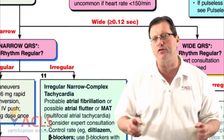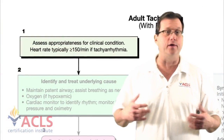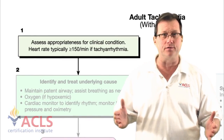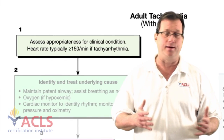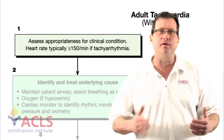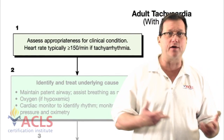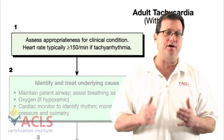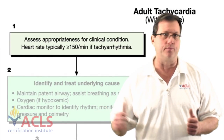I want to take a few minutes and just review narrow complex tachycardias. A tachycardia is any rhythm that has a ventricular rate over 100. What we're concerned about in the adult is when the ventricular rate exceeds 150. If it's less than 150, think: is there another cause for this? Is the patient dehydrated? Are they anxious? Are they having a reaction to a drug? Is there another cause besides a primary cardiac event? If ventricular rate's over 150, we're thinking this could be cardiac in origin and we're going to treat that appropriately.